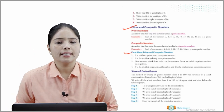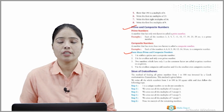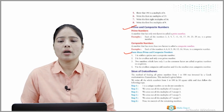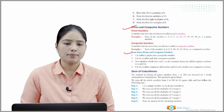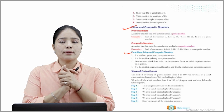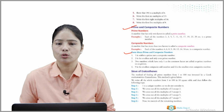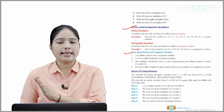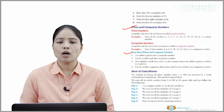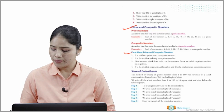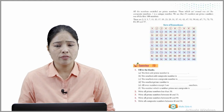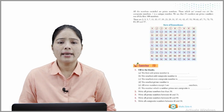Sieve of Eratosthenes: The method of finding all prime numbers from 1 to 100 was invented by a Greek mathematician Eratosthenes. We write all whole numbers from 1 to 100 in a 10-square table and follow these steps: Step 1 — 1 is a unique number so we do not consider it. Step 2 — Cross out all multiples of 2 except 2. Step 3 — Cross out all multiples of 3 except 3. Step 4 — Cross out all multiples of 5 except 5. Step 5 — Cross out all multiples of 7 except 7. Now encircle all the remaining numbers — those encircled are prime numbers; those crossed out are composite numbers.